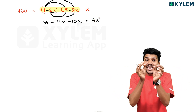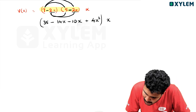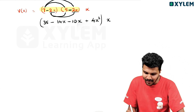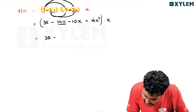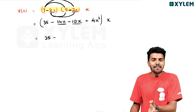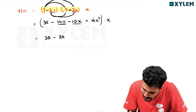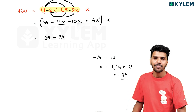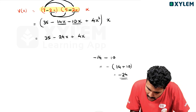Now I'm going to break it up. So we have 35 minus 14x minus 10x. Minus 14 minus 10 — that's minus 24. So we get minus 24x.